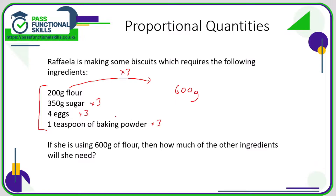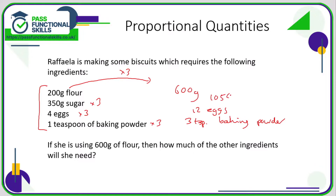So she's going to need three teaspoons of baking powder, 12 eggs, and the trickiest calculation: three lots of 350g of sugar. 350 multiplied by three is 1050 grams of sugar. And we're done — we're just scaling the recipe up three times.